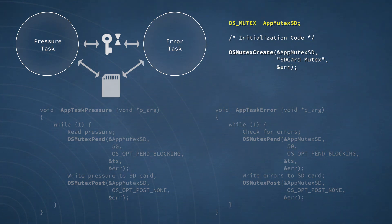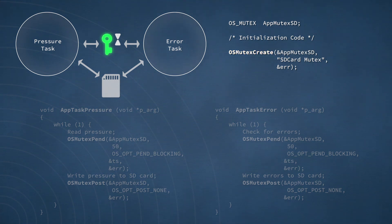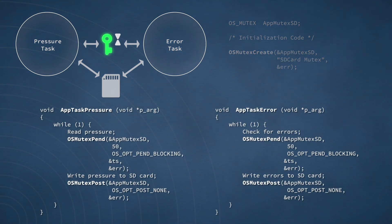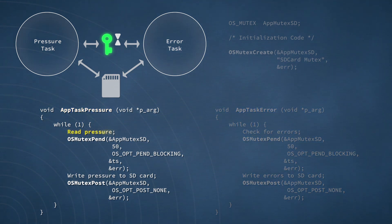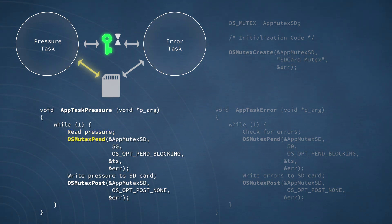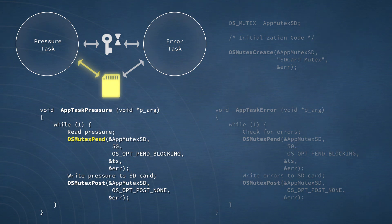The OSMutex structure must be initialized before any pends or posts can take place. The initialization is accomplished via OSMutexCreate, and after initialization, the mutex is in the available state. Below the initialization code are two tasks that will make use of the mutex. In the pressure task's first line, the task obtains the pressure data and is then ready to write that data to the SD card. Before the write, it makes a call to OSMutexPend in order to gain exclusive access to the card. Suppose the card is not currently in use by the error task — in that case, the mutex would be in the available state, and the pend function would return in short order, and the task would begin writing to the card.